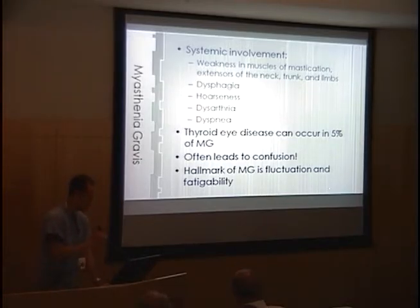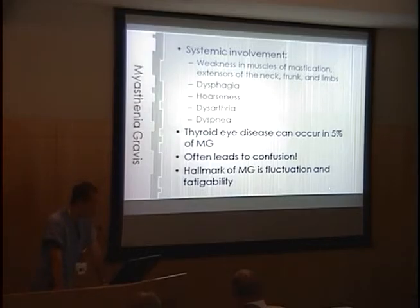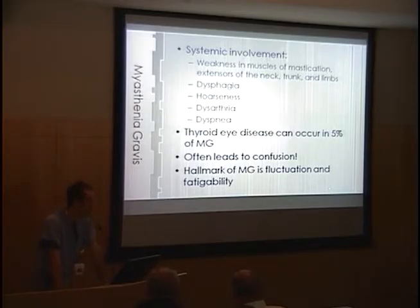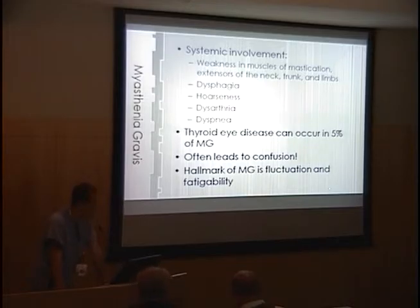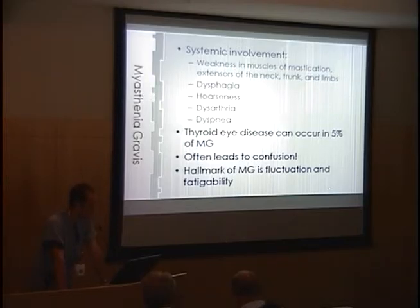Myasthenia gravis is not always just an ocular disease; systemic findings can also be involved, including weakness in other muscle groups — muscles used in chewing, the neck, trunk, and even limbs. Dysphagia, hoarseness, dysarthria, and dyspnea can also be indications of systemic involvement. Thyroid eye disease can also be associated with myasthenia gravis in about five percent of these patients. As you can see, with exam findings and the way the patient may present, it can often lead to confusion in sorting out what is related to myasthenia gravis versus something else.